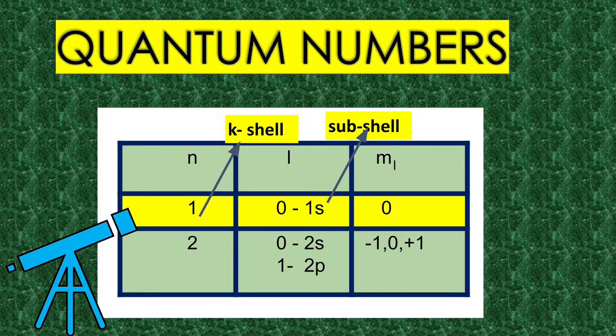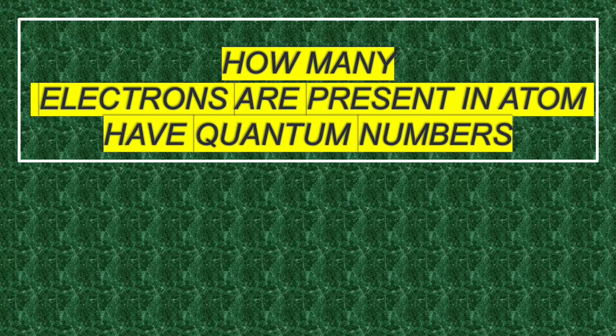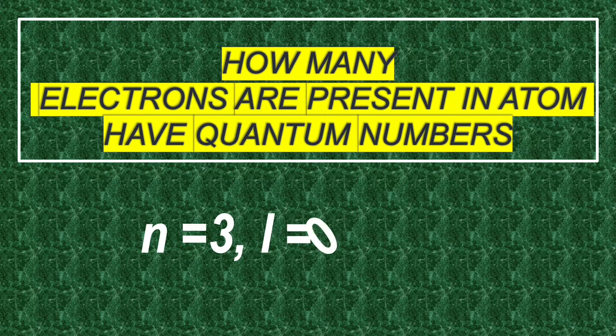Welcome to Aurora Chemistry for everyone. In this video, let us analyze how to find the number of electrons in an atom having the quantum numbers n equals 3, l equals 0.